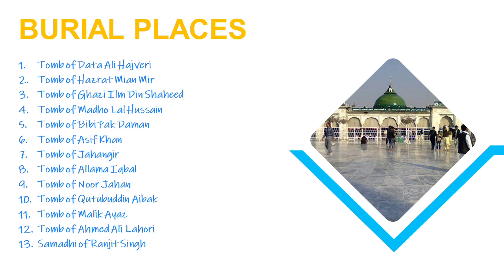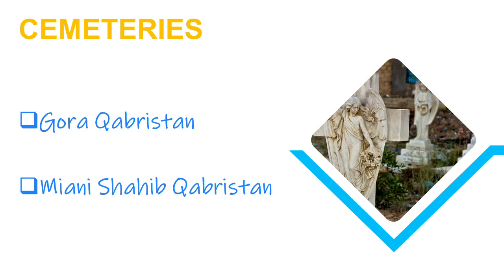There are many burial places in Lahore which are famous and important for both Muslims and non-Muslims. These include: number one, tomb of Ali Hajwari; number two, tomb of Hazrat Mian Mir; number three, tomb of Ghazi Ilmdin Shaheed; number four, tomb of Madhu Lal Hussain; number five, tomb of Bibi Pak Daman; number six, tomb of Asif Khan; number seven, tomb of Jahangir; number eight, tomb of Allama Iqbal; number nine, tomb of Noor Jahan; number ten, tomb of Qutbuddin Aibak; number eleven, tomb of Malik Ayaz; number twelve, tomb of Ahmad Ali Lahori; and number thirteen, Samadhi of Ranjit Singh.